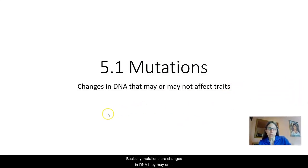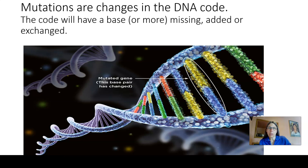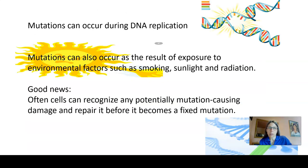Basically, mutations are changes in DNA. They may or may not affect the traits. So simply put, mutations are just changes in the DNA code. And this could be a one base change, or it could be more. And it might mean that a base has been taken out, added, or exchanged. So when I say base and DNA code, here's DNA, and here's the A with the T and a C with a G. These are the bases that I'm referring to.